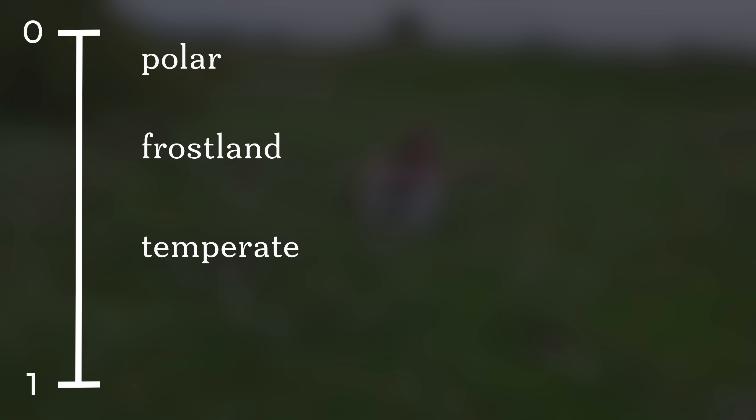So let's only name the regions after the temperature. Under the hood I use a temperature scale from 0 to 1 to make calculations easier; only when it needs to be shown to players is this translated into a scale from minus 50 to 50 degrees. Starting at zero we have polar, then frostlands, a temperate region. But wait — mountain peaks are also colder and can even have snow, but naming them polar wouldn't make sense. If an area is colder and has high elevation, let's name it montane instead.